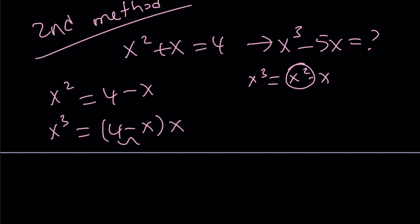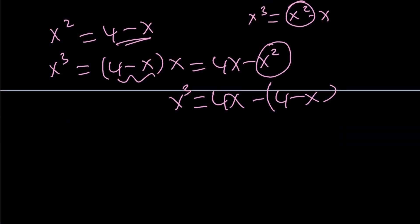I'll just evaluate x cubed. Multiply 4 minus x by x because x cubed is x squared times x. And this is x squared, remember? So if you distribute, you get 4x minus x squared. But again, x squared is 4 minus x. So replace x squared with 4 minus x. Continue doing it until you get a linear expression. And you'll get x cubed equals 5x minus 4 because you have to distribute the negative.